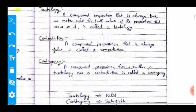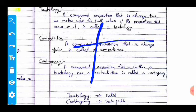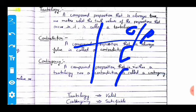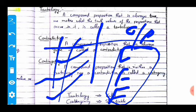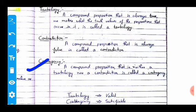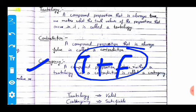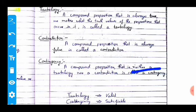A contradiction is a compound proposition that is always false — the output of the truth table is always false regardless of the inputs or statements used. A contingency includes both true and false values in the outcome of the truth table — it is neither a tautology nor a contradiction.